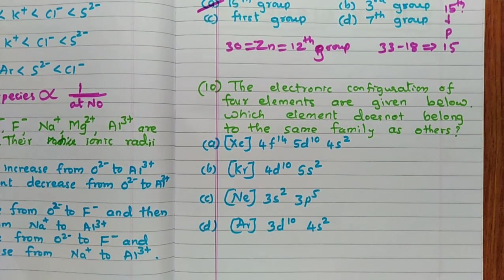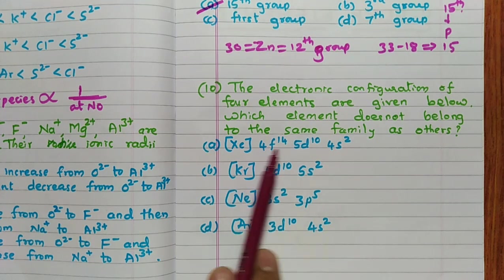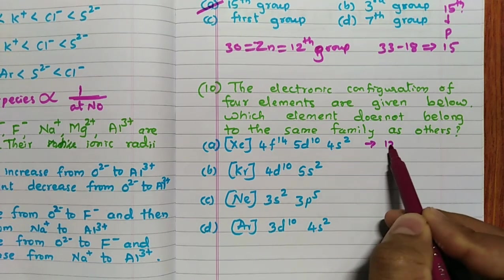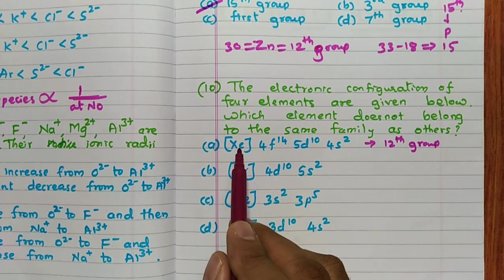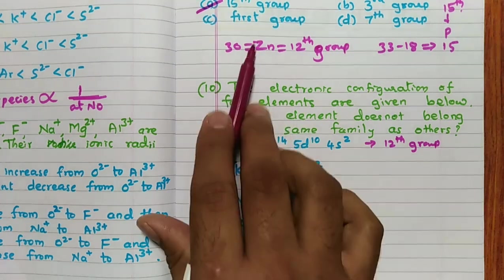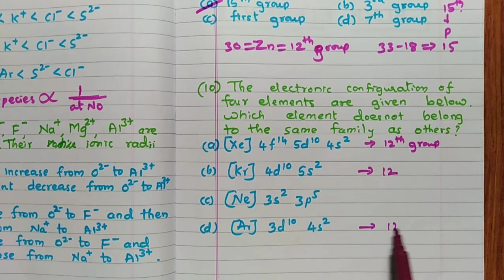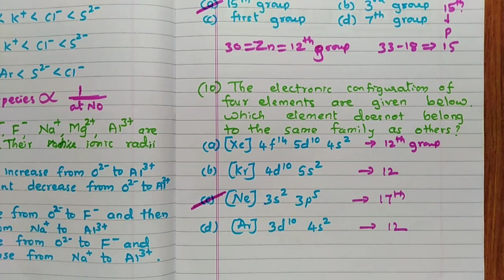Question ten: the electronic configurations of four elements are given — which element does not belong to the same family as the others? The configuration [Xe] 4f¹⁴ 5d¹⁰ 6s² has D¹⁰ completely filled and S² — this belongs to the 12th group (zinc family). Similarly, [Kr] 4d¹⁰ 5s² is also 12th group, and [Ar] 3d¹⁰ 4s² is also 12th group. But [Ne] 3s² 3p⁵ belongs to the 17th group. So option C, with the 3s² 3p⁵ configuration, does not belong to the same family as the others.